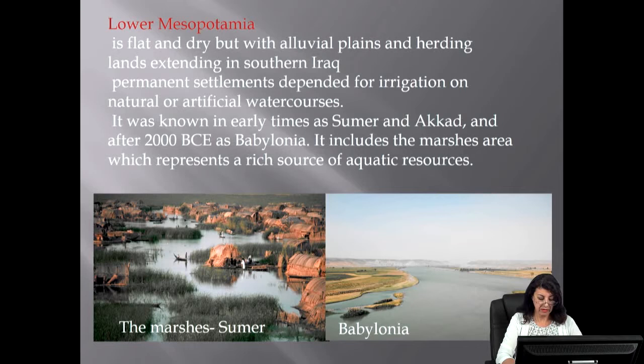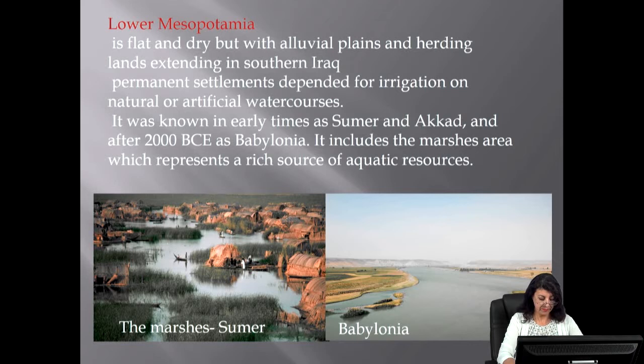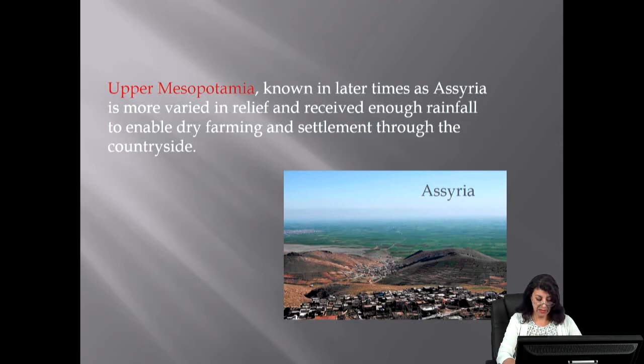Lower Mesopotamia is flat and dry, but with alluvial plains and herding lands extending in southern Iraq. Permanent settlements depended for irrigation on natural or artificial water courses. It was known in early times as Sumer and Akkad, and after the second millennium BCE as Babylonia. It includes the marshes area, which represents a rich source of aquatic resources. Upper Mesopotamia, known in later times as Assyria, is more varied in relief and received enough rainfall to enable dry farming and settlement throughout the countryside.